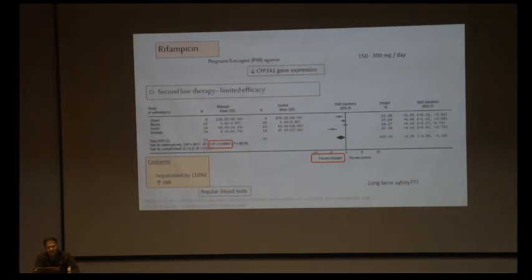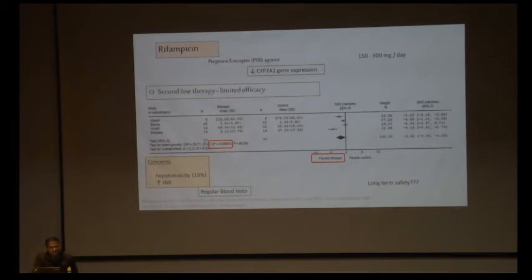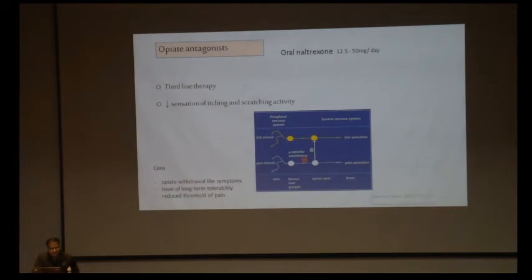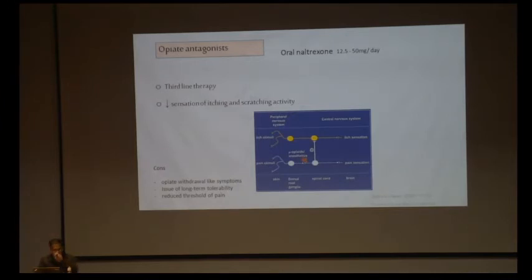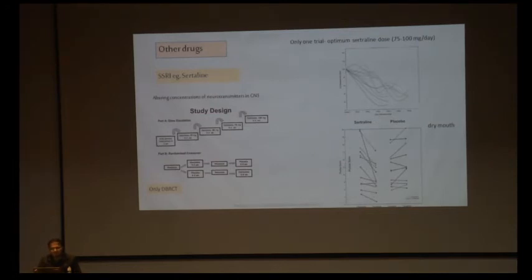Rifampicin is started usually at 150 mg and can be increased to 300 mg. Meta-analyses show efficacy for pruritus. However, there is a 10% risk of hepatotoxicity, prolongation of INR, and some hemolysis, so patients need regular monitoring for transaminitis. It is not suitable for long-term management and is considered second-line therapy. Naltrexone is the opioid antagonist used, but it has its own side effects, opioid withdrawal symptoms, and reduced pain threshold, making it difficult to continue beyond a couple of months.